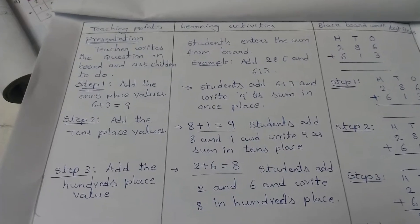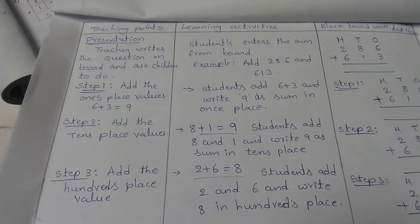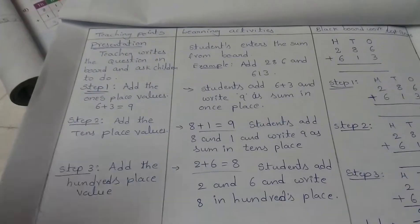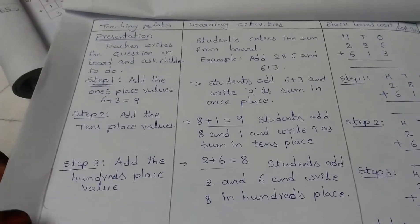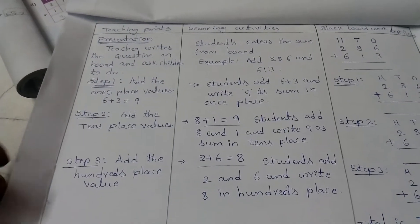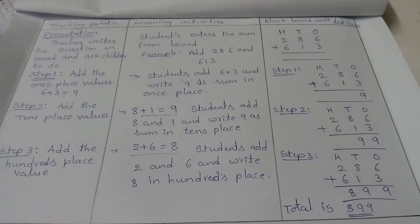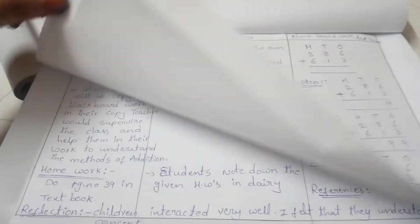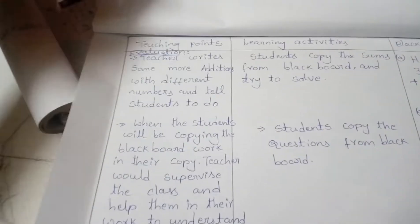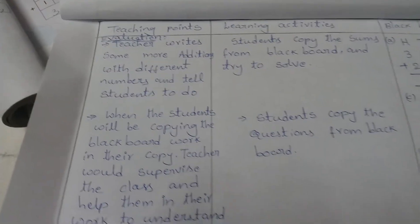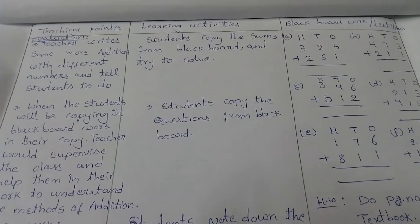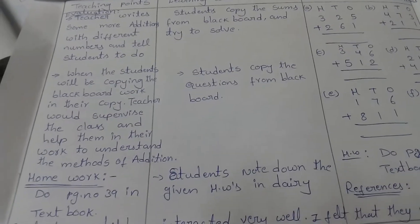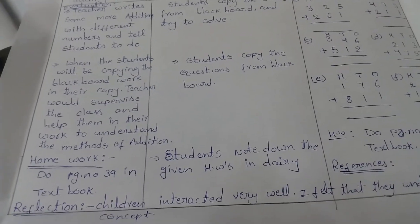In the presentation section, I wrote step-by-step how we will teach the students in class. First, we will add the ones place, next the tens place, and then the hundreds place. The blackboard activity is also written out step-by-step, followed by evaluation and blackboard work.